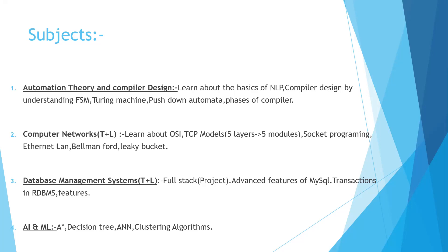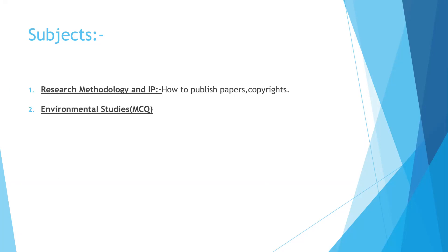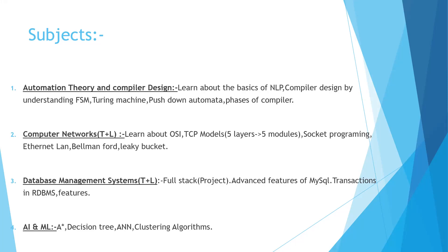AI/ML is also there. In this, you'll be learning about various algorithms like A-star, decision tree, and ANN. The A-star algorithm is mostly used in games — for example, moving from one point to another in the shortest route. Decision tree is used for filtering data, such as based on user preferences on social media. You should also know that ML is a part of AI, not the reverse — ML is a subset of AI.